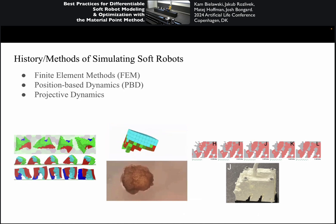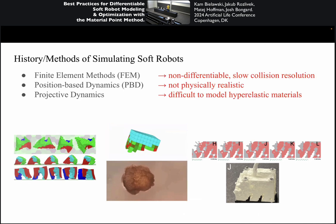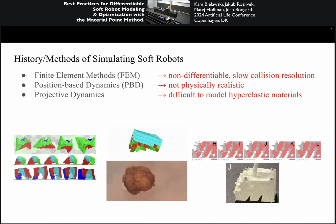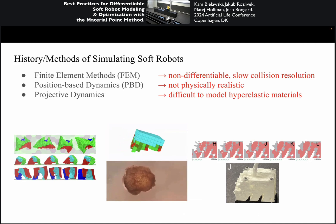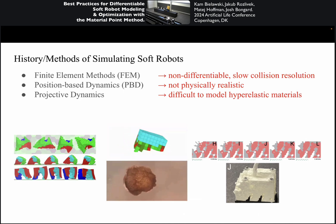Later on there are particle-based methods like position-based dynamics and projective dynamics. But there are shortcomings to each of these methods. Finite element methods are non-differentiable and sometimes very slow. PBD is not physically realistic because it uses a predictive model to estimate system dynamics. And projective dynamics — it's hard to model hyper-elastic materials, which a lot of soft robotics uses.